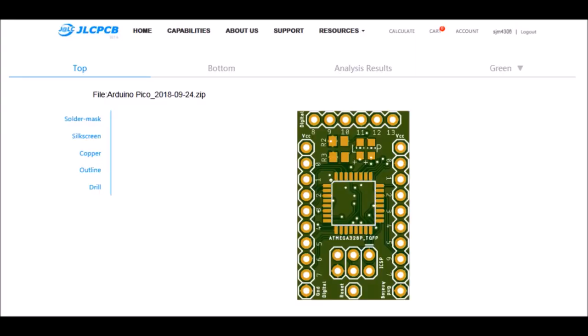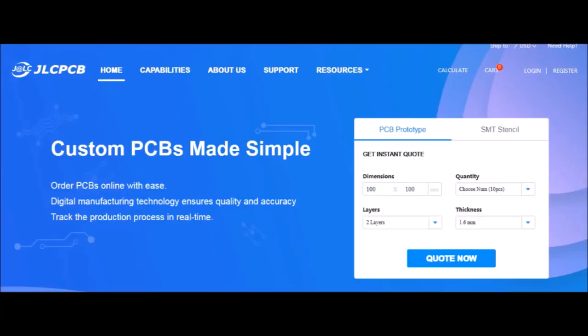A word from this video sponsor. Got an idea for a circuit, widget, or device that you want to rapid prototype yourself? Check out JLC PCB. They offer board manufacturing services starting at two bucks for five boards and only take a few days from start to finish.